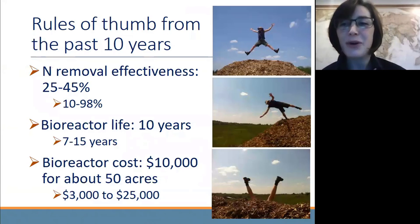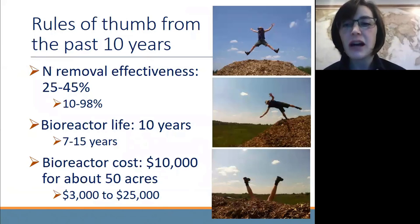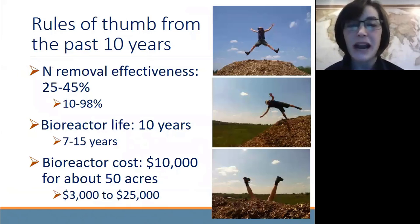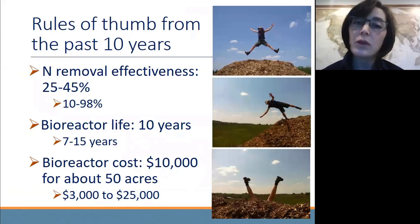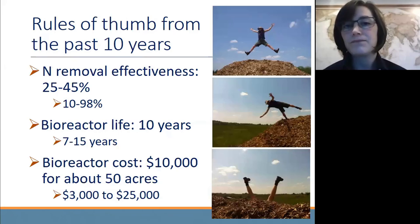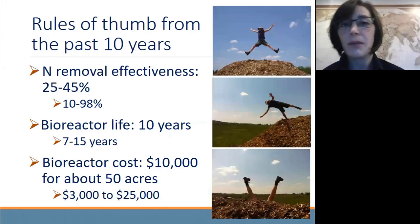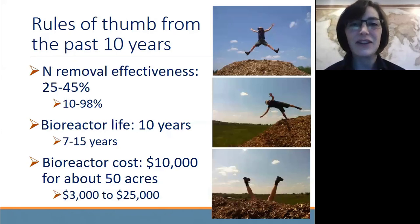We have learned a couple good rules of thumb about bioreactors from our research over the past 10 years. First and foremost: how well do bioreactors work? The rule of thumb is about 25 to 45 percent nitrogen load reduction on an annual basis — an average number across all our research sites across many years. However, keep in mind that's just a rule of thumb. Any given bioreactor in any given year might range from 10 percent up to almost 100 percent nitrate removal. Every site is different and every year is always different.